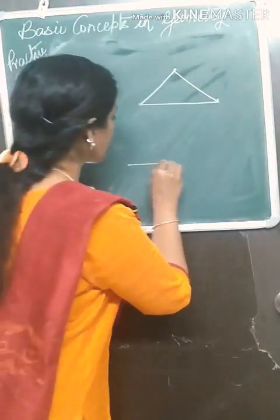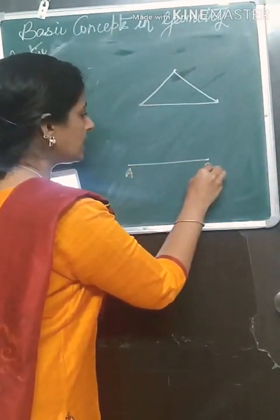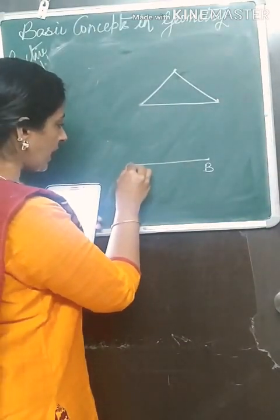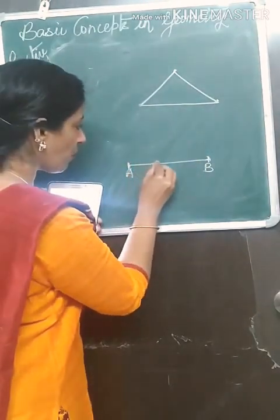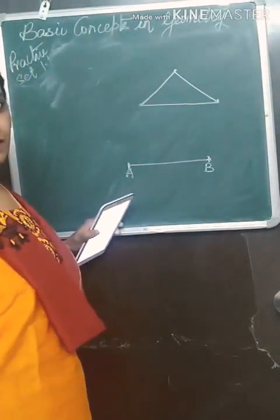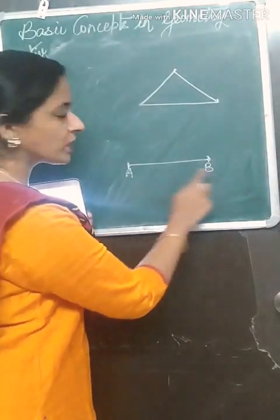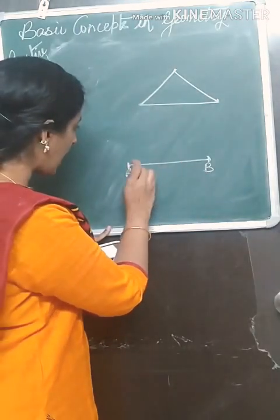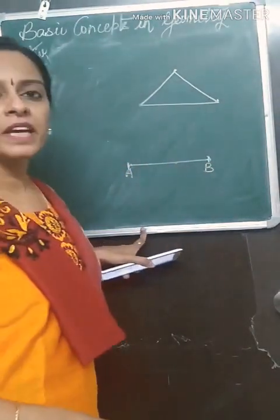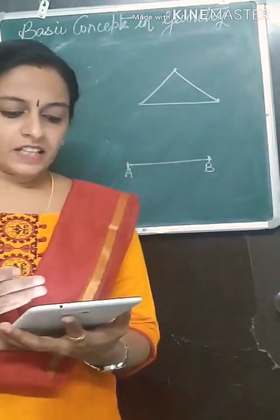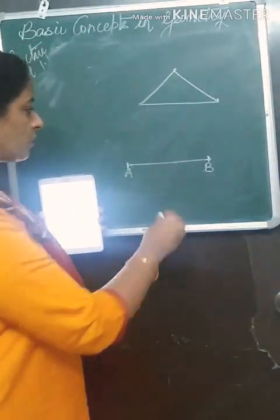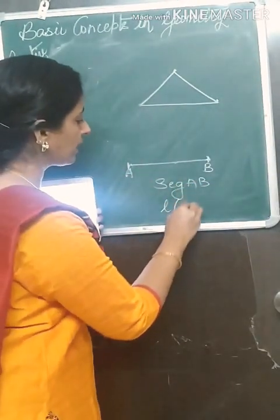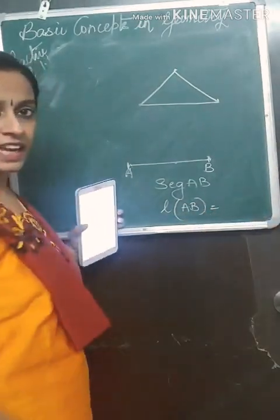A line segment is the union of point A, point B, and all the points between A and B together — that makes a segment. When you write about a segment you write segment AB, and if you are writing about length, you write length AB equals whatever the length.